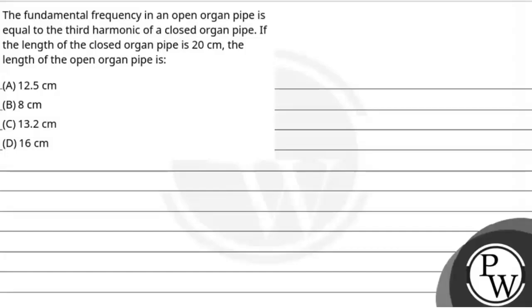Hello Batchu, let's read this question. The fundamental frequency in an open organ pipe is equal to the third harmonic of a closed organ pipe. If the length of the closed organ pipe is 20 cm, then the length of the open organ pipe is...